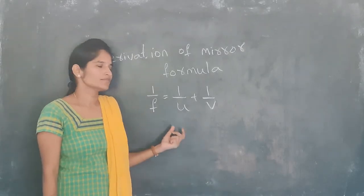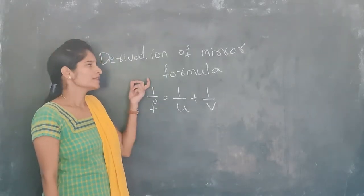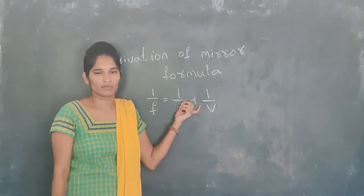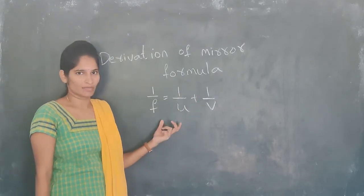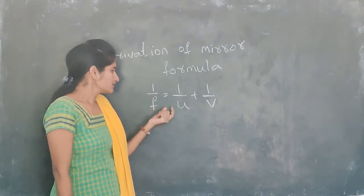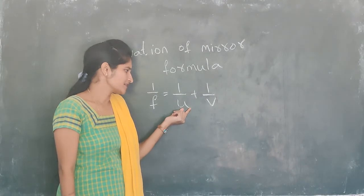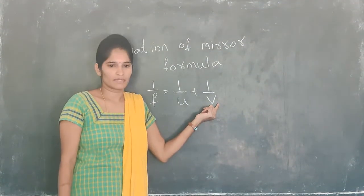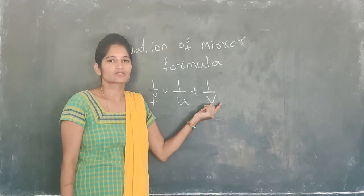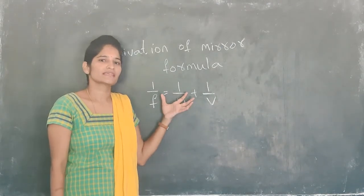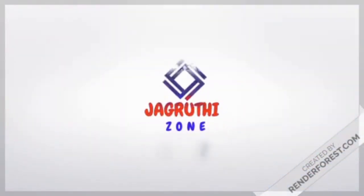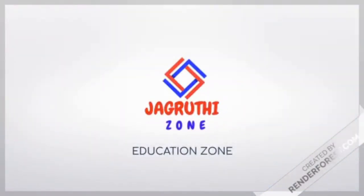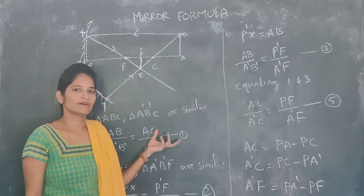Welcome students. Today we will learn about derivation of mirror formula — how to derive the formula, and also when you know the object distance and focal length, then we need to find out the position of the image. We will see how to derive the formula for a mirror in this class.